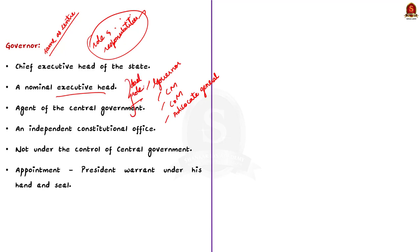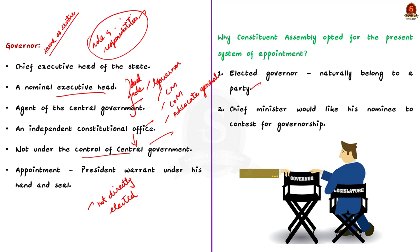The governor is neither directly elected by the people nor indirectly elected by a specially constituted electoral college. He is appointed by the president by warrant under his hand and seal, making him a nominee of the central government. Note that the office of governor is not an employment under the central government — it is an independent constitutional office not subordinate to the central government. The constituent assembly opted for presidential appointment instead of direct election because an elected governor would naturally belong to a party and would not be a neutral, impartial head.